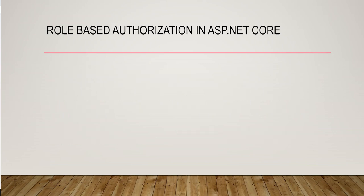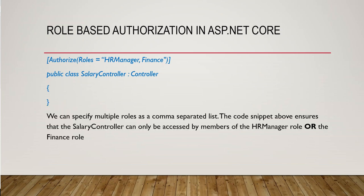Here we are putting the Authorize attribute with Roles set to 'HRManager' and 'Finance'. A member who has got the HRManager role or the Finance role has access to the Salary controller. We can specify multiple roles as a comma-separated list. This ensures the Salary controller can only be accessed by members of the HRManager role or the Finance role — either or.